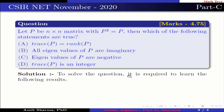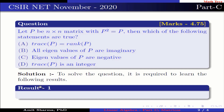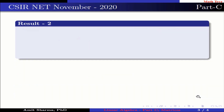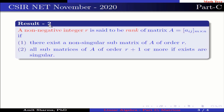To solve the question, it is required to learn the following results. Result 1: a square matrix A is said to be an idempotent matrix if A² = A. Result 2: a non-negative integer R is said to be the rank of matrix A (m×n) if there exists a non-singular sub-matrix of A of order R, and all sub-matrices of A of order R+1 or more, if they exist, are singular.